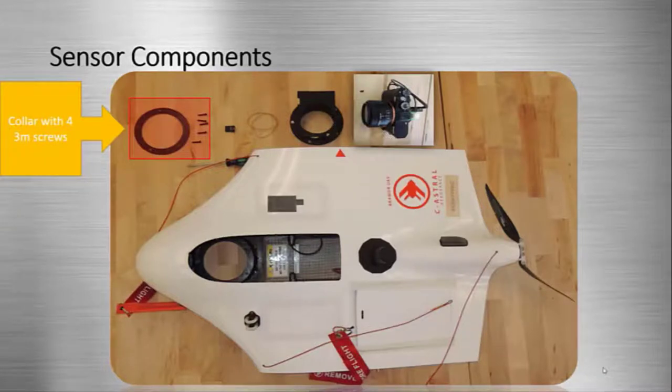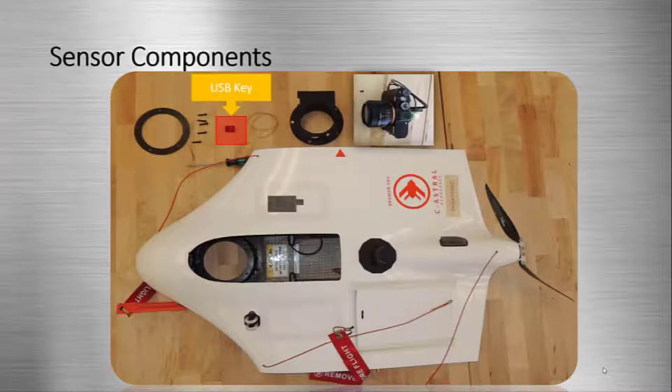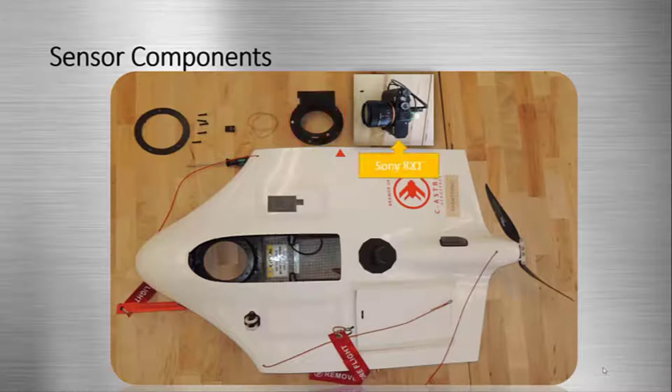the collar with four 3M screws, the USB key, two rubber bands, the sensor seat, the Sony RX1 sensor, and the singular 3M screw that secures the data link cable.